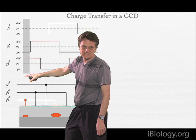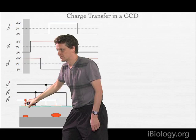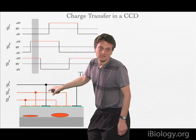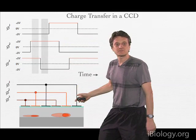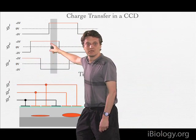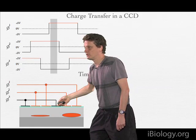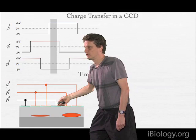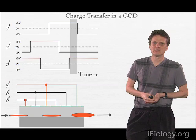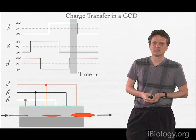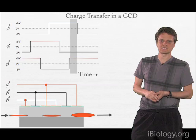This process repeats itself over and over again, at a rate of many millions of times a second, to read out the charge that was accumulated in the CCD chip.